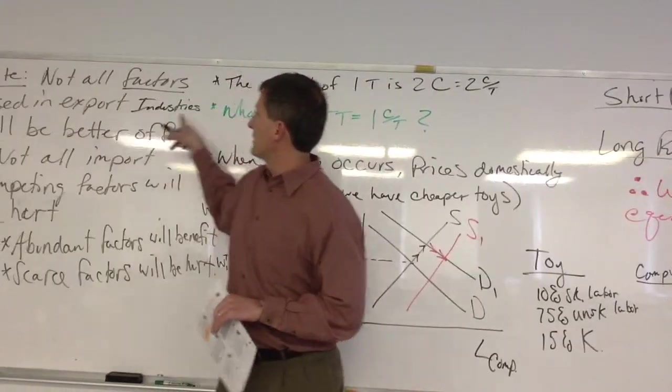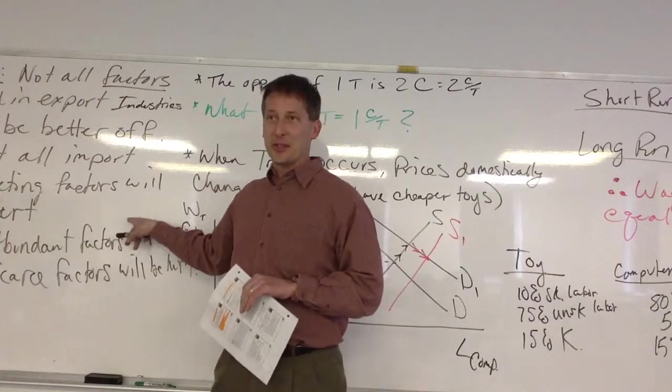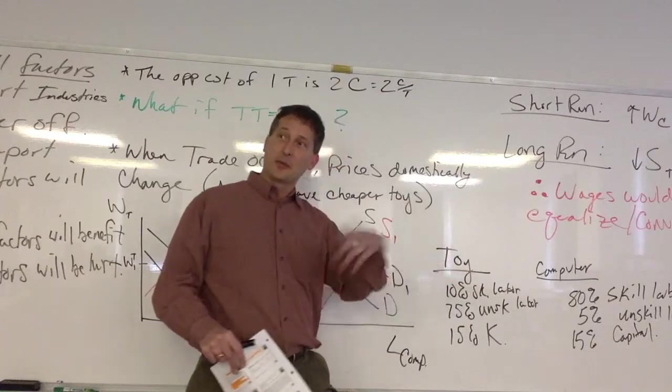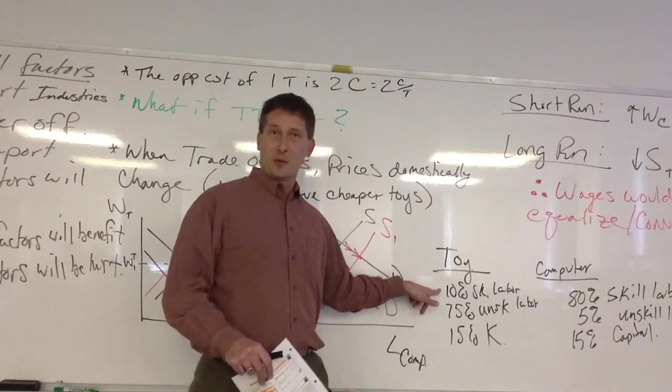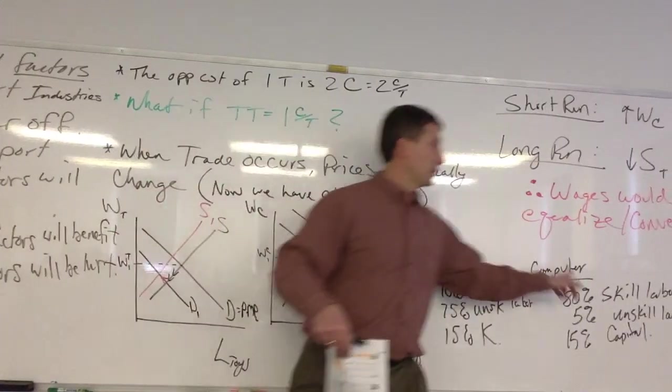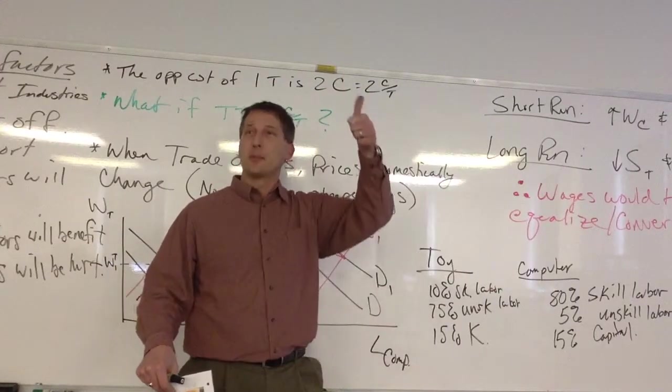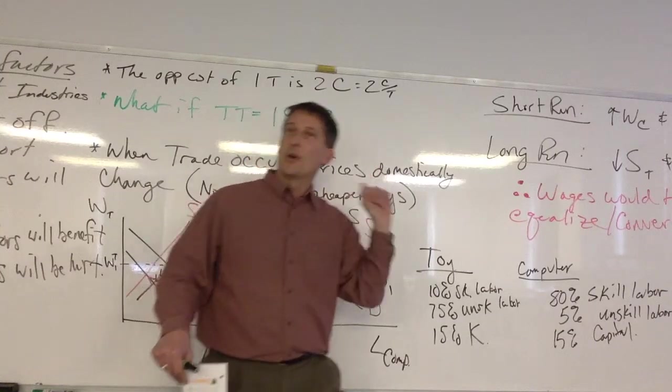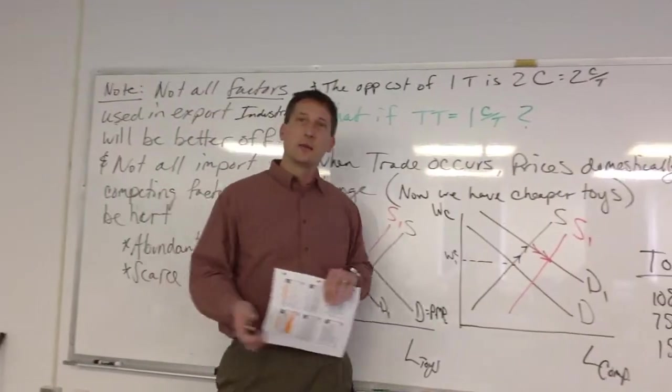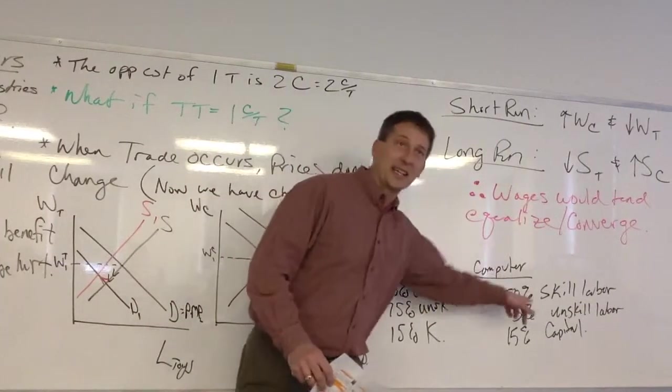So not all factors used in the export industries will be better off. Not all import competing factors will be hurt. We're competing now. American toy people are competing with overseas. But their skilled labor people are made better off because of that. Because their opportunity cost is now to go to the emerging sector. So if these guys want to keep this guy around, you've got to bump up their pay. So the factor that's abundant is kind of the one you want to be with. And if you're not there, then you get into that long run effect of maybe you need to get there.